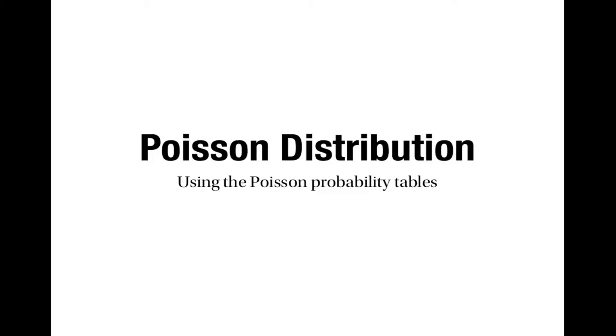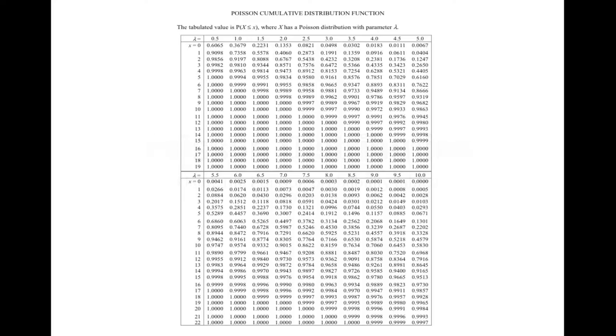This is a video about using the Poisson probability tables to find probabilities connected with the Poisson distribution. You'll see the probability tables in your formula book and they look something like this. They have much in common with the probability tables for the binomial distribution.